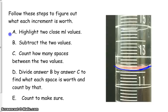Remember, we read at the bottom of the meniscus. So our reading level is going to be right about there. So let's go through the steps again. A. Highlight two close milliliter values. And the two I have on the screen here are 11 and 13.